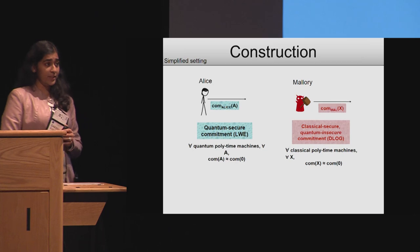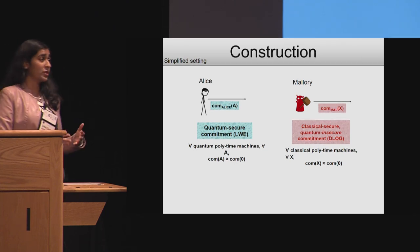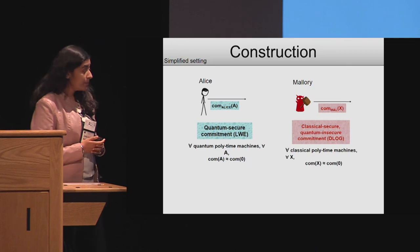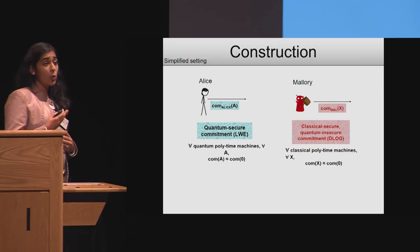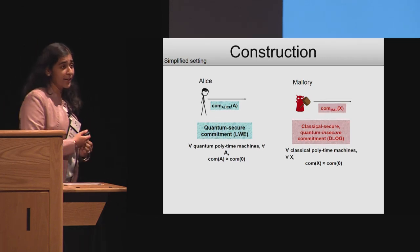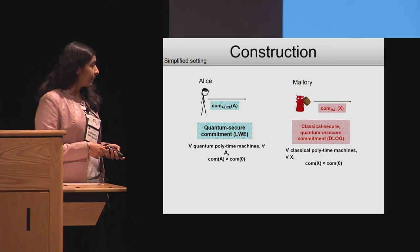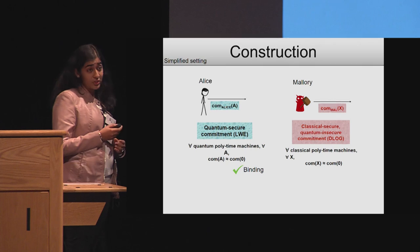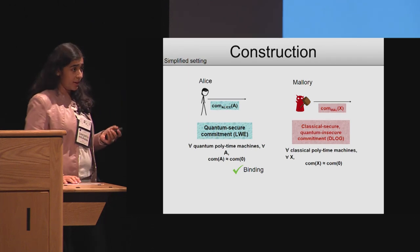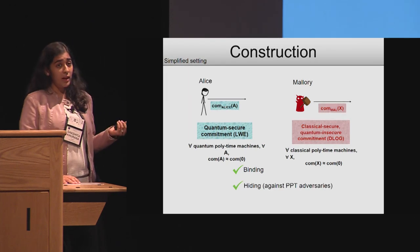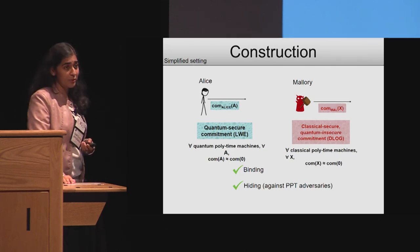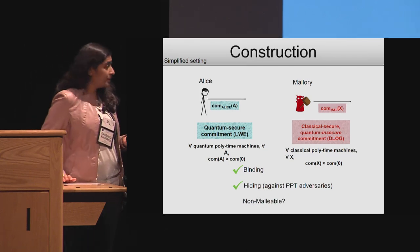No classical adversary can distinguish commitments to input x from commitments to zero. However, quantum adversaries can actually break this commitment and find out the value that was committed. This construction is binding and hiding according to the standard definitions. Is it non-malleable?